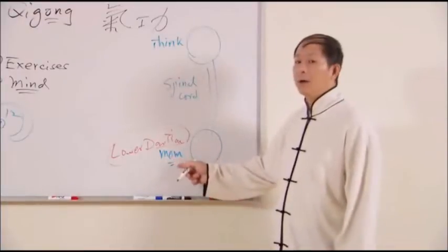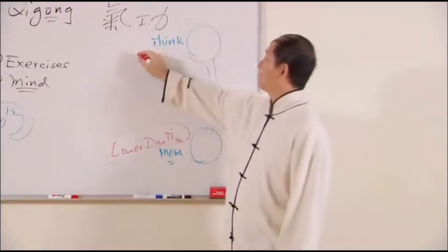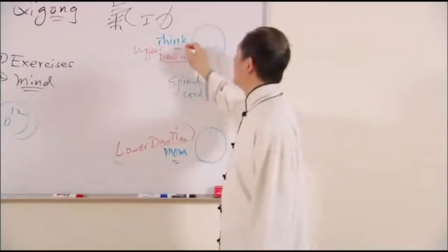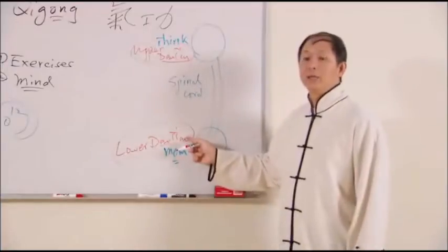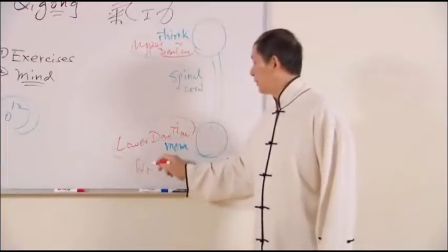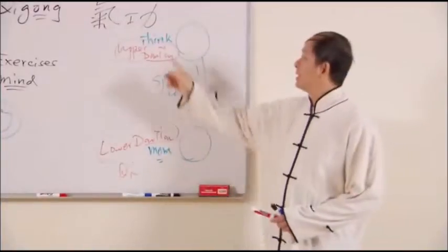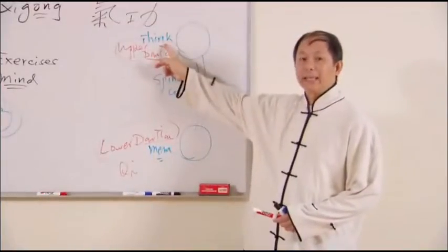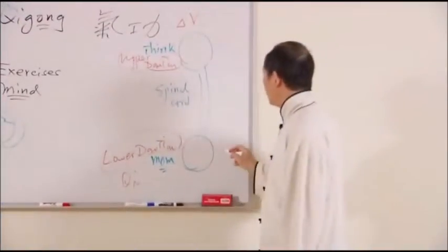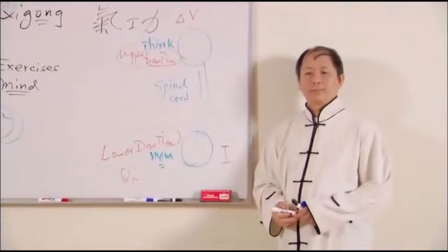Today they call it the second brain. This one, first brain. This one thinks. This one Chinese called upper dan tien. Chinese say upper dan tien is related to your spiritual life. Lower dan tien is related to your physical life, because this one provides you the qi. This one controls the qi manifestation. This one directs the qi because it's thinking. That means this one gives you delta V. This one supplies you the I, the current.